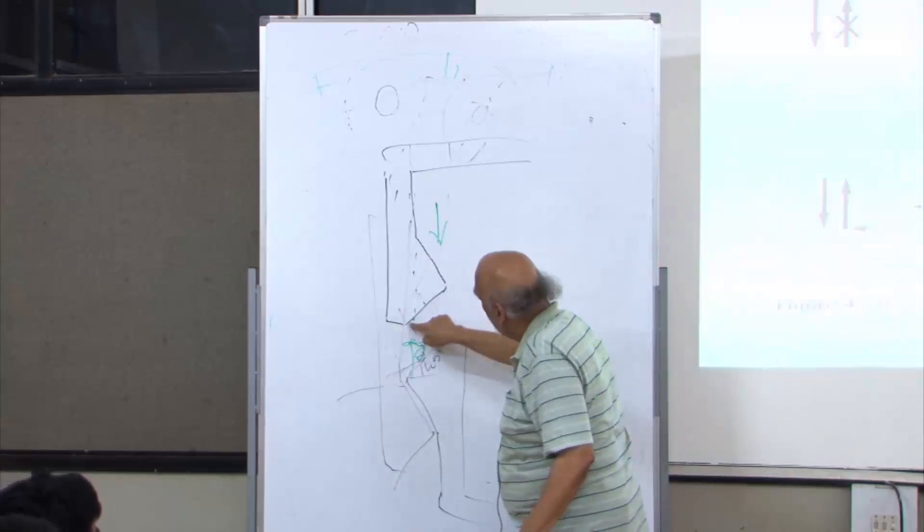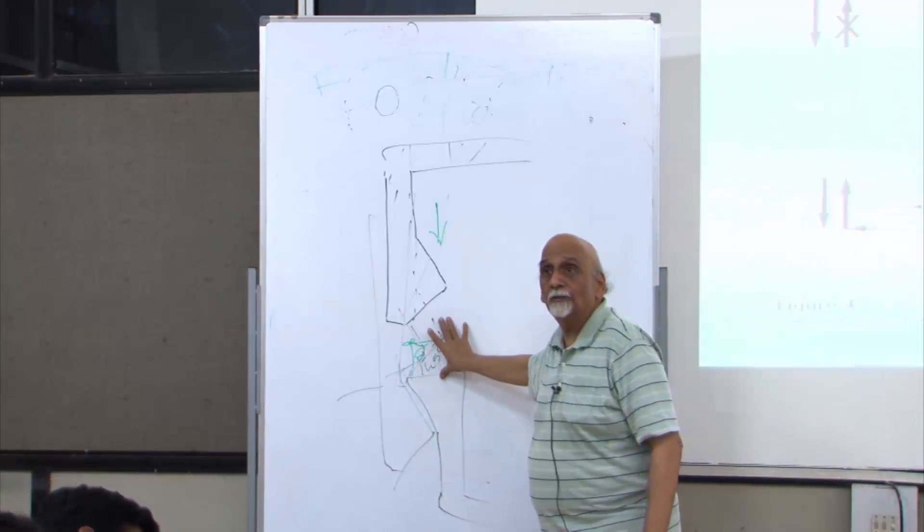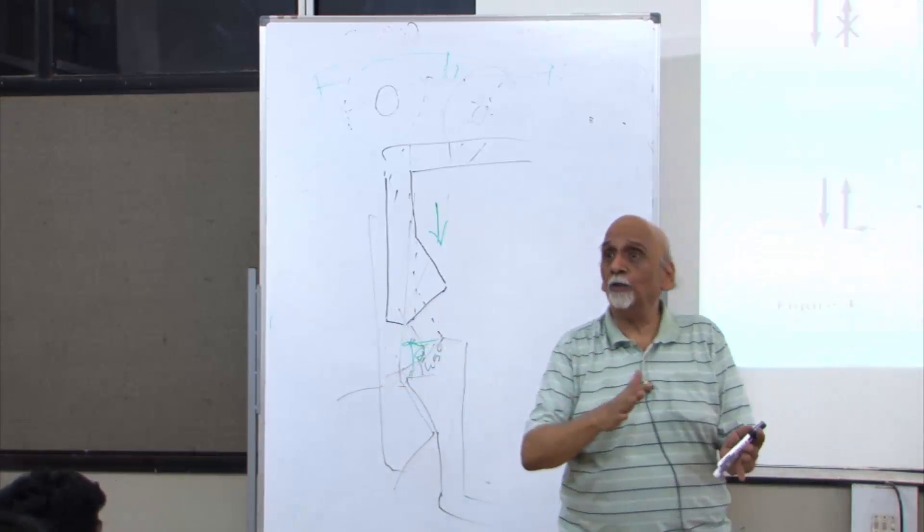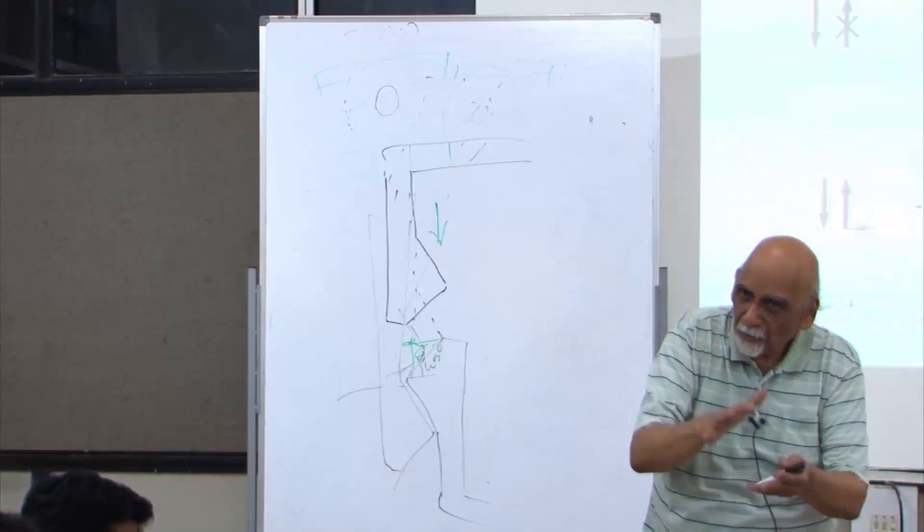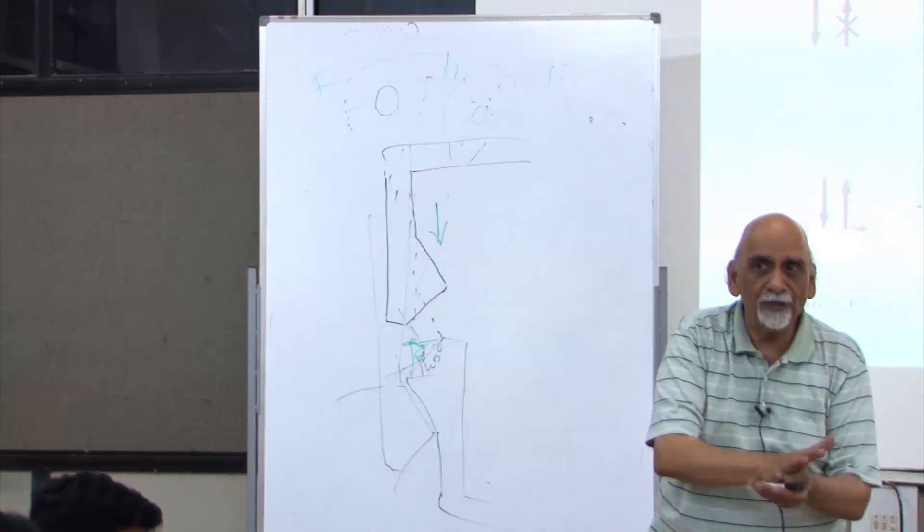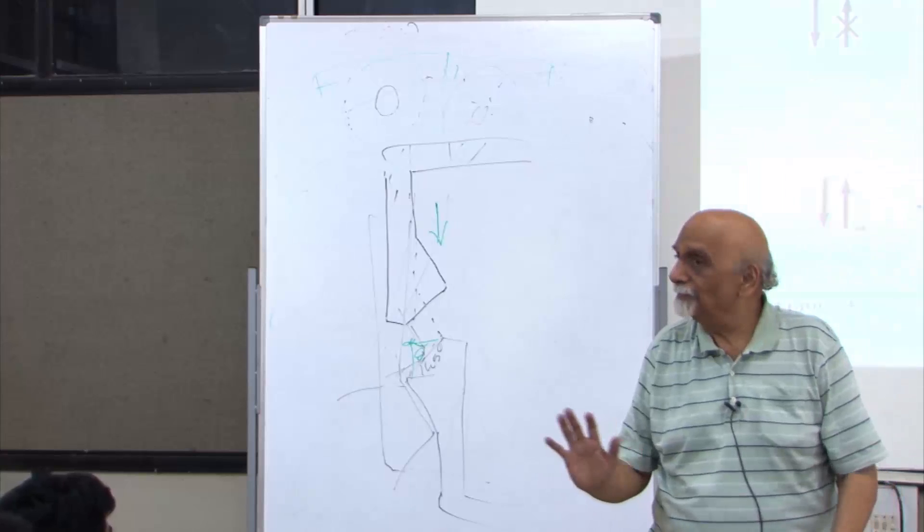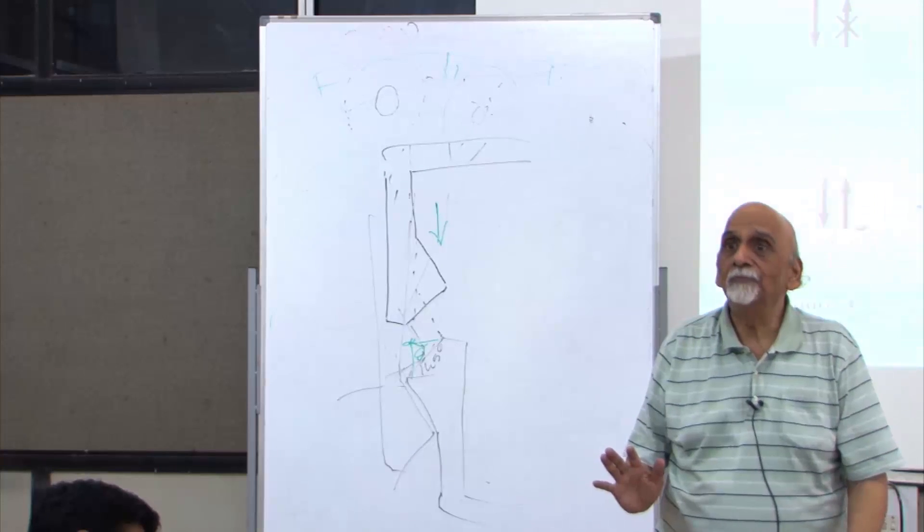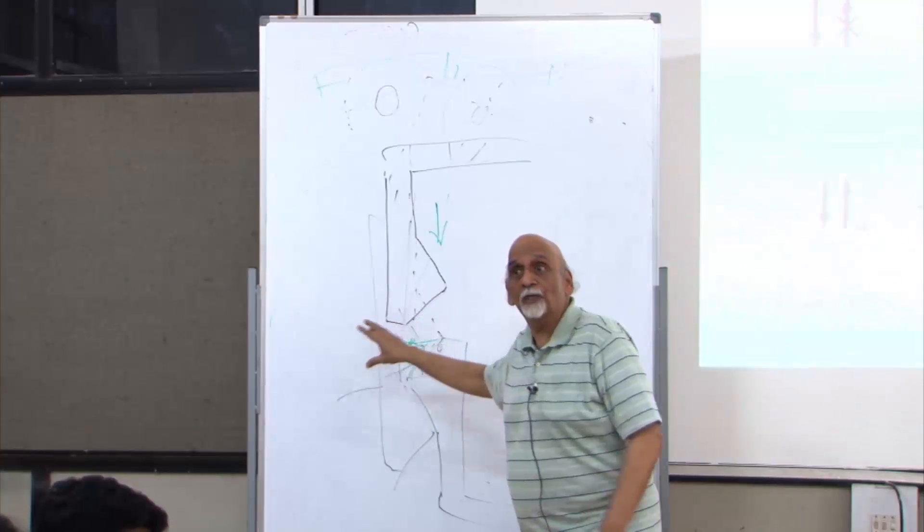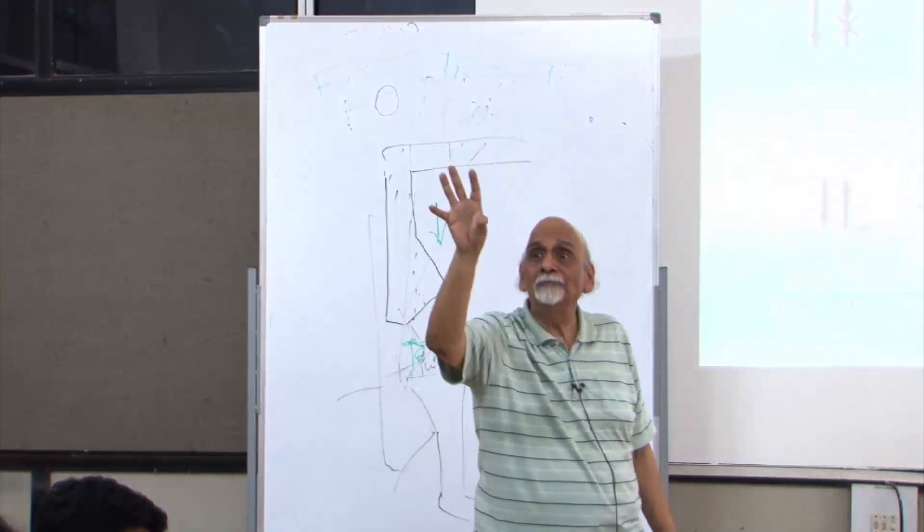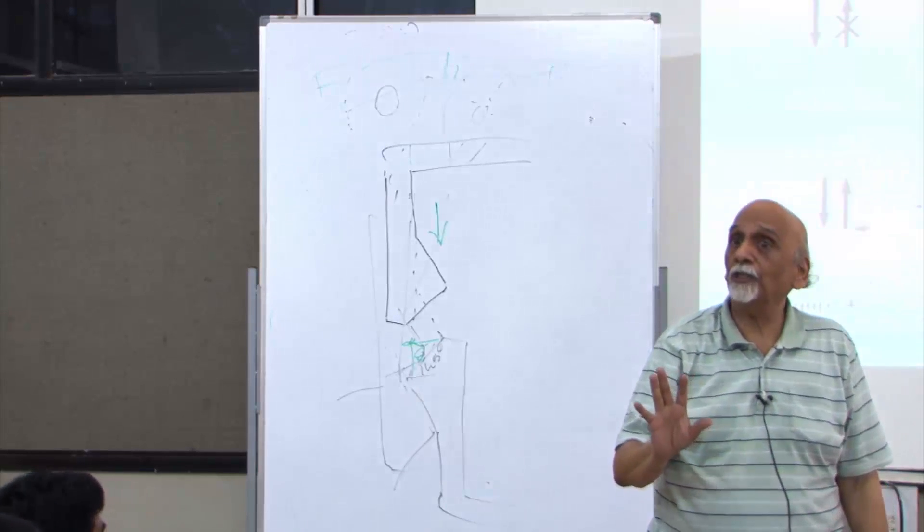This particular joint is called snap-on, snap-off, meaning I can close the thing by pushing further, and I can pull it to open it. Because I have this angle, when I am pulling, the same reverse action is going to happen.